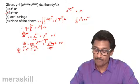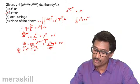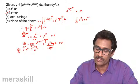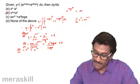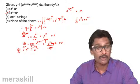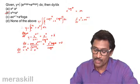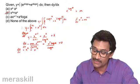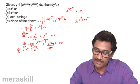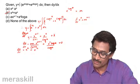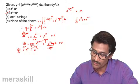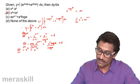To clarify: e raised to log x raised to a equals x raised to a, and the other term is a raised to x. The function y is the integral of x raised to a plus a raised to x. So y equals x raised to a plus 1 upon a plus 1 plus a raised to x upon log a. Differentiating back gives dy by dx equals x raised to a plus a raised to x.